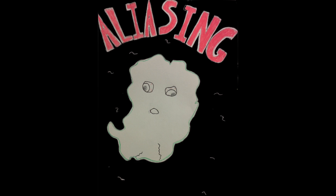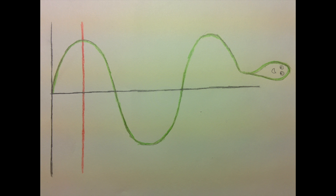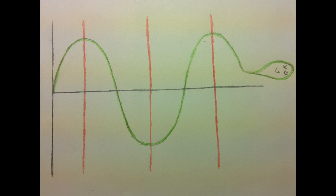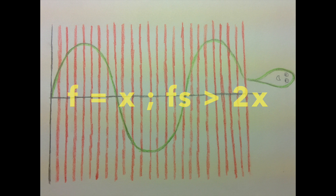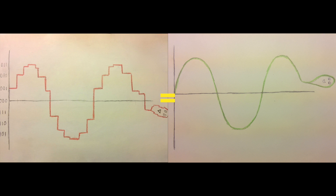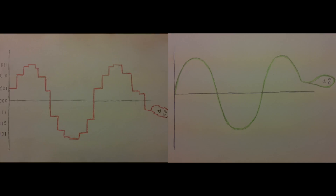That whole long predicament's named: it's called aliasing, and it's a shame. But as long as you cut at Nyquist and above, you'll probably come out unscathed.